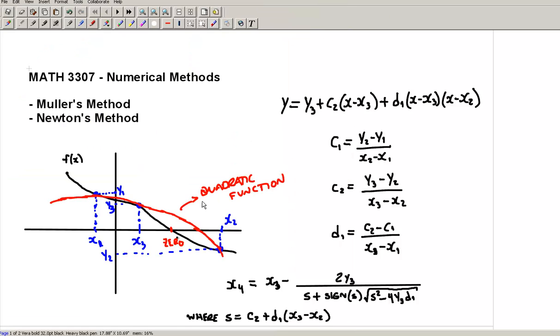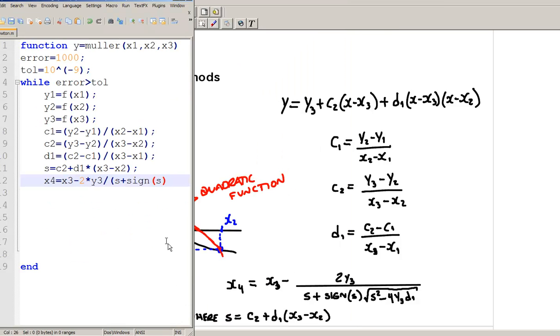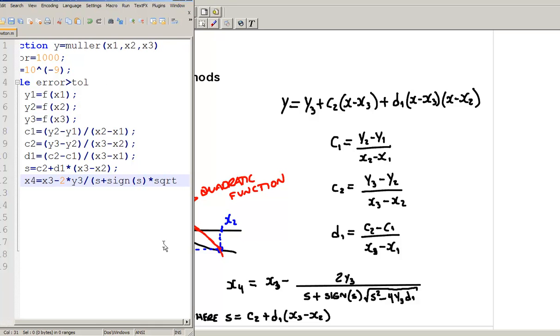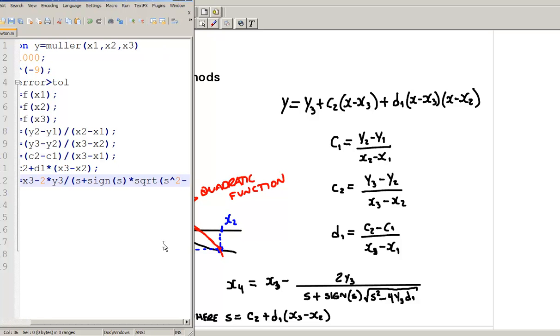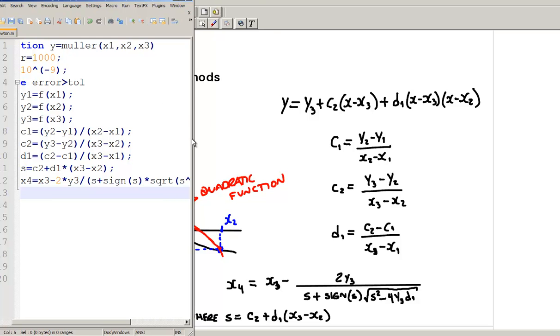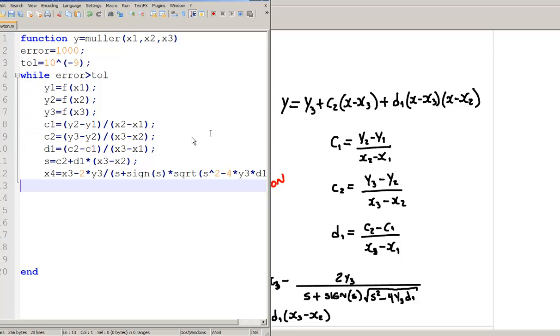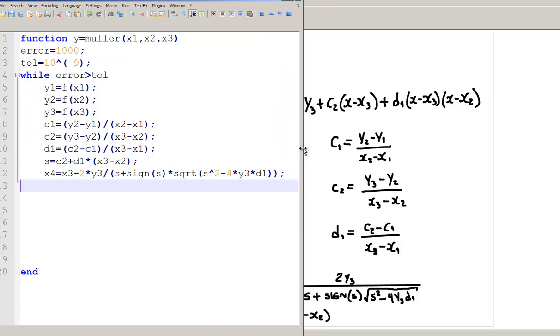Let's put that in here. We need to know the signal of the variable s. And then, that is multiplied by the square root of s squared minus 4 times y3 times d1. Close parenthesis. So, that's x4.